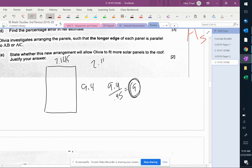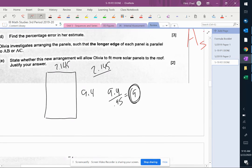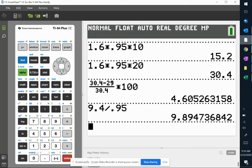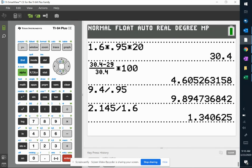And then 2.145 divided by 1.6. That's only going to give us 1 for sure. It's 1.3, so only 1.